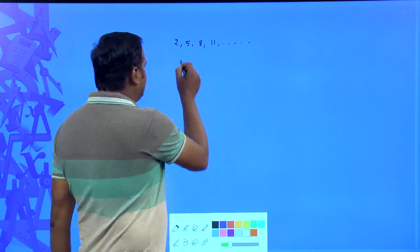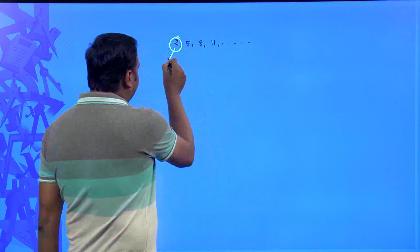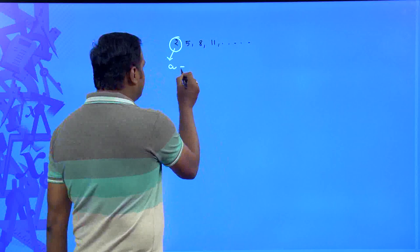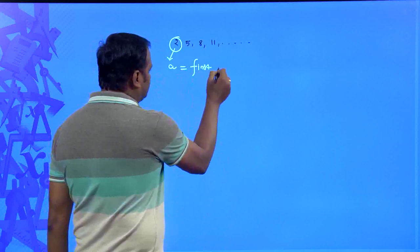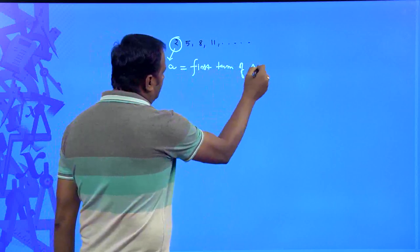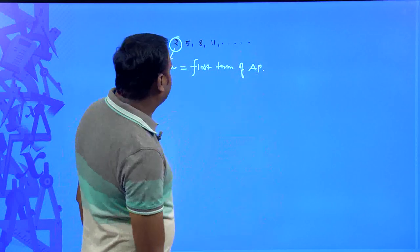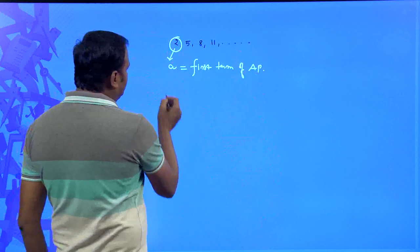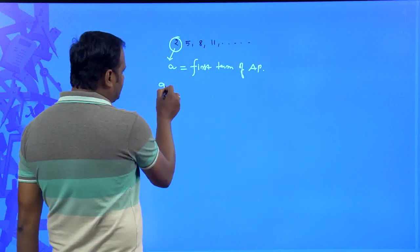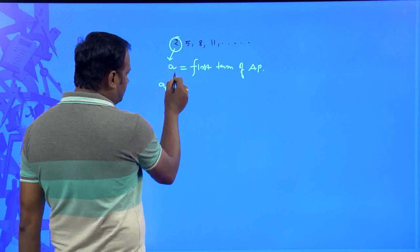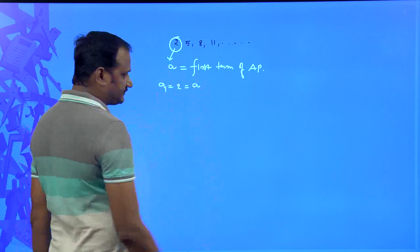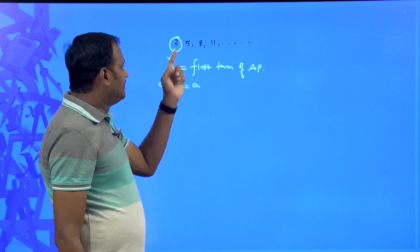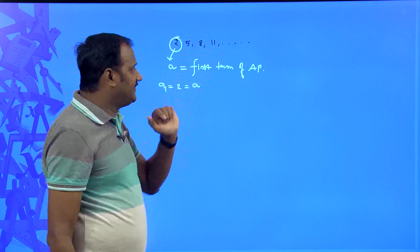In any arithmetic progression, the very first number is indicated by small 'a' and is called the first term. So a is equal to the first term of the arithmetic progression. The first term a₁ is equal to 2 in this example. The fixed number being added here is 3, since 2 plus 3 equals 5, 5 plus 3 equals 8, and 8 plus 3 equals 11.